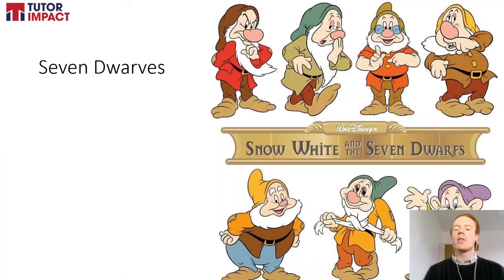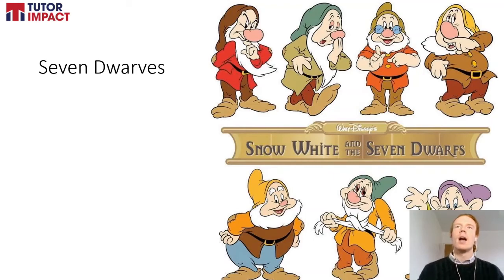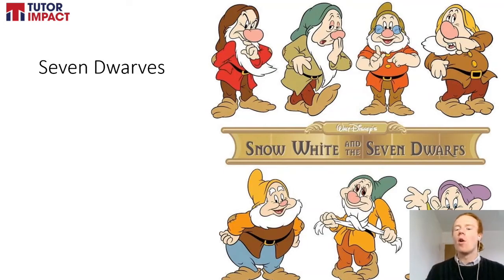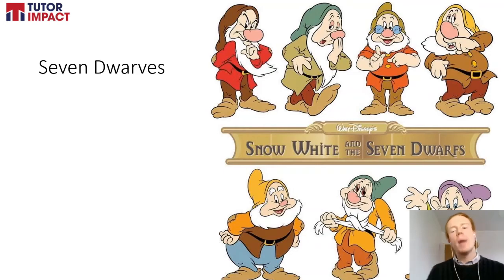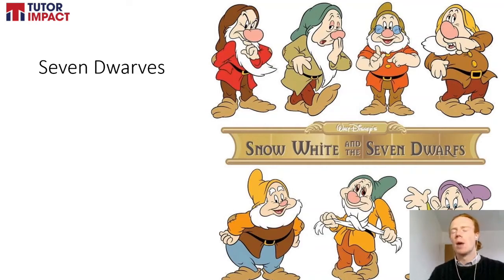Now we're going to imagine a scenario with our seven dwarves again and think about why these seven very different people might have reasons to be jealous of one another. Interestingly, all seven dwarves will be jealous of each other for one reason or another — there's not one dwarf that is clearly the best. This is a hypothetical exercise to get us thinking about the nature of jealousy and why it comes about.